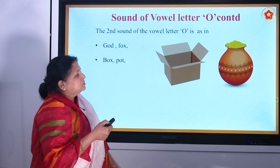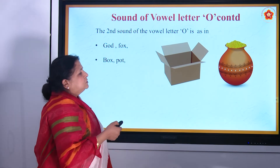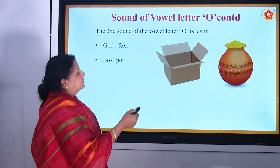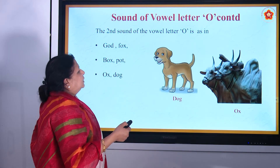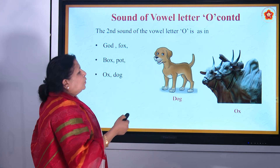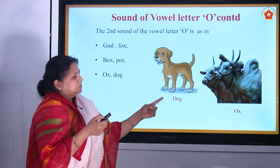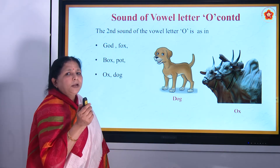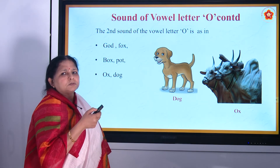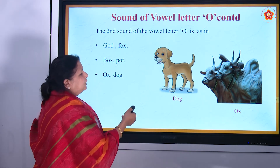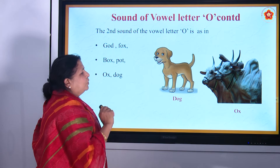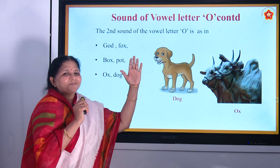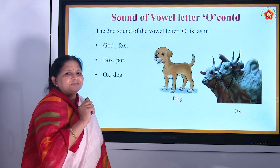Then 'box' — B, O, X — box. Then 'pot' — P, O, T — pot. Then 'ox' — O, X — ox. What is the meaning of ox? A bull — that bull is also called ox. And then 'dog' — D, O, G — dog. How many of you have a dog as a pet?